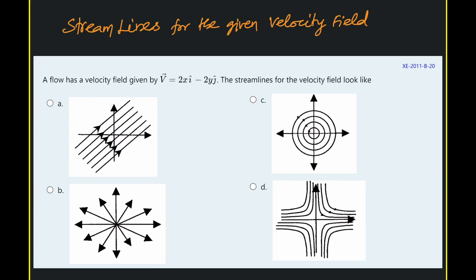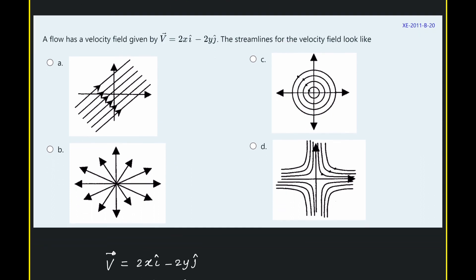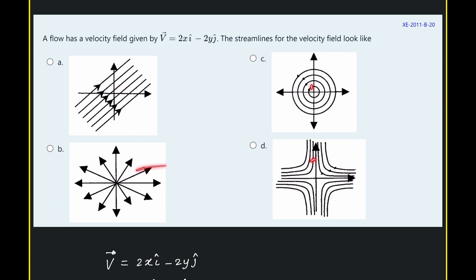This problem is about finding the streamlines for the given velocity field. It was asked in Engineering Sciences 2011 of GATE. A flow has a velocity field given by v equal to 2x minus 2y. The streamlines for this velocity field look like which among these four options is the matching one.